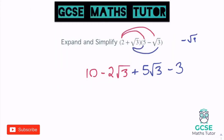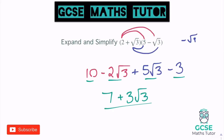Positive root 3 times negative root 3 makes negative root 9, which is minus 3. Tidying it up: 10 take away 3 is 7. And for the root 3 terms — negative 2 root 3 add 5 root 3: negative 2 add 5 is positive 3, so it's plus 3 root 3. I can collect those two root 3 terms together. Final answer: 7 plus 3 root 3.